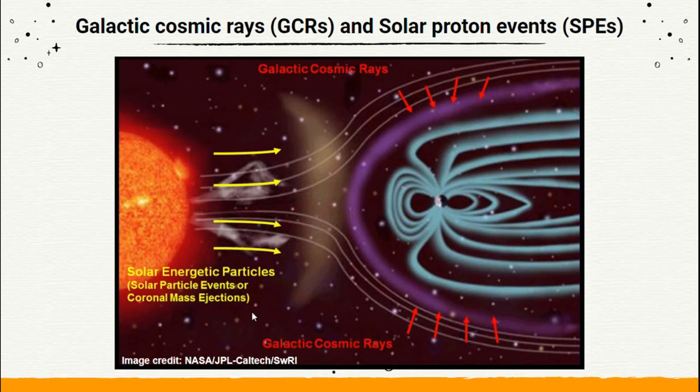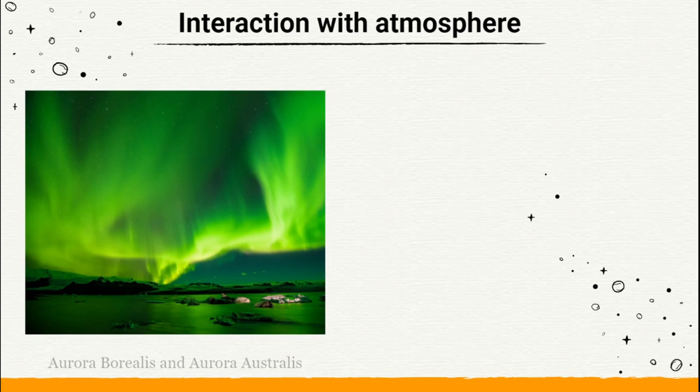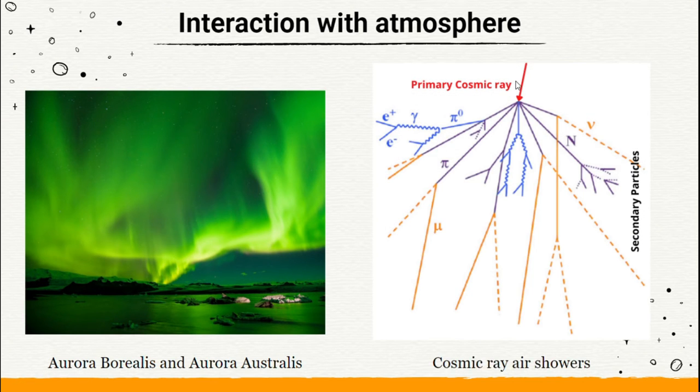Earth's magnetosphere acts as a line of defense against these energetic particles. However, they do reach the poles and cause the polar aurora. Some particles that manage to pass through the shield interact with the particles in the atmosphere, resulting in the generation of secondary particles that reach the ground.